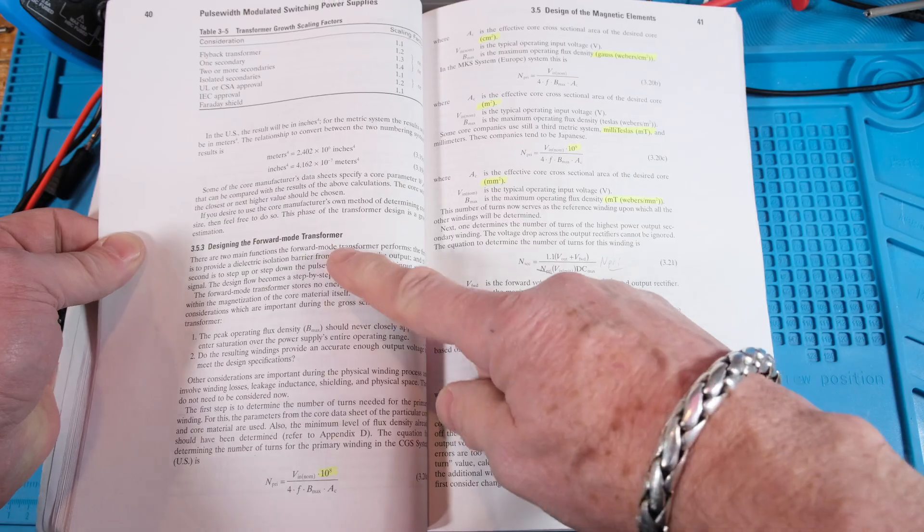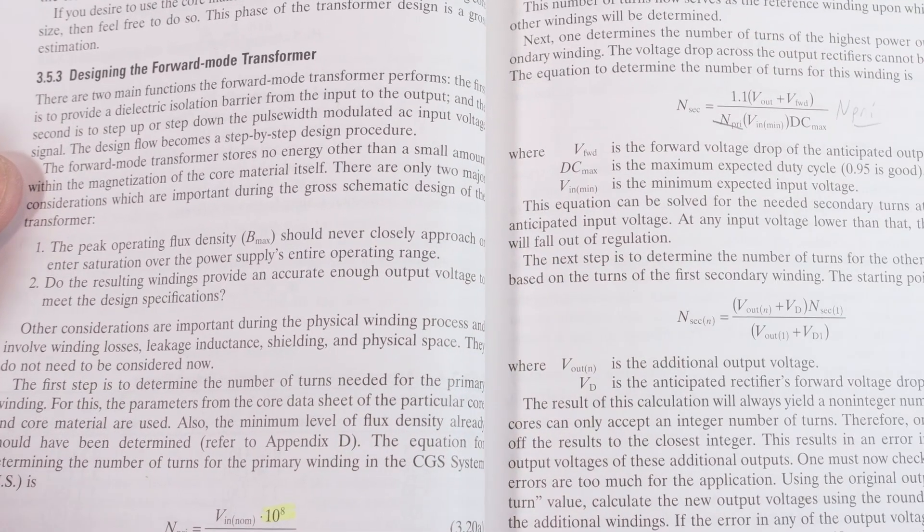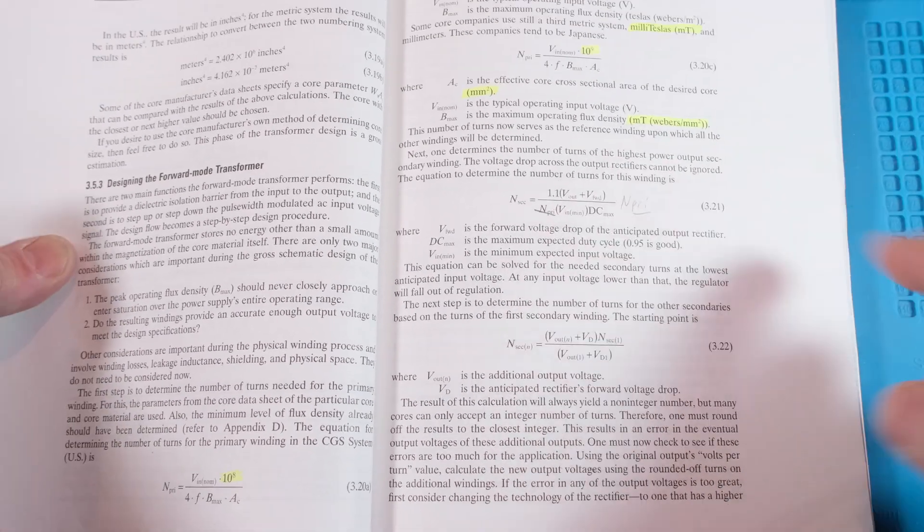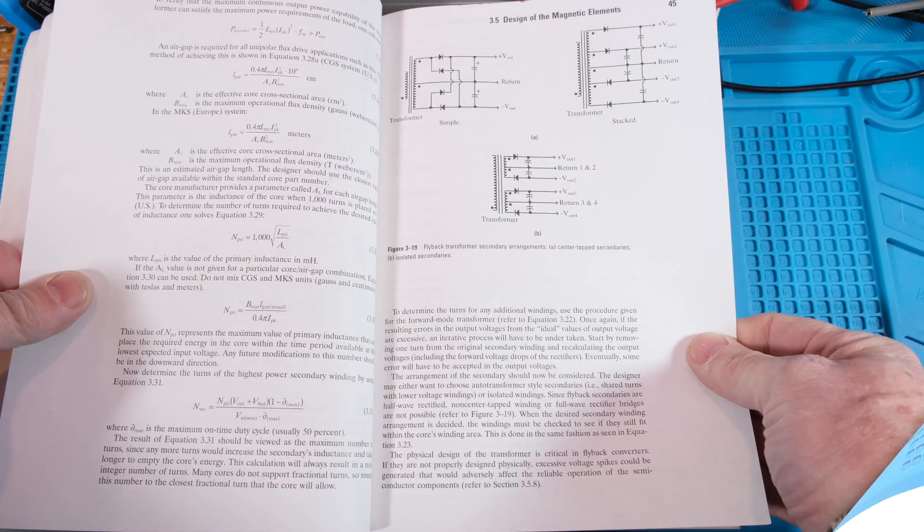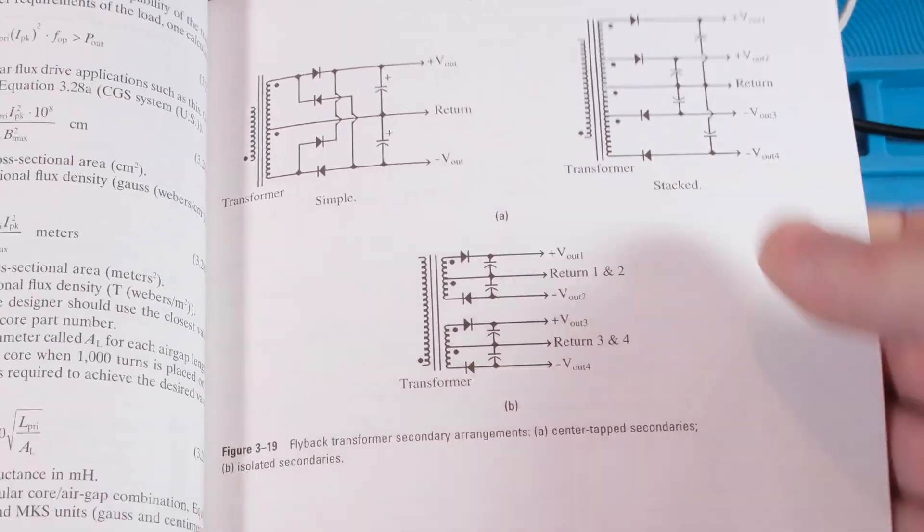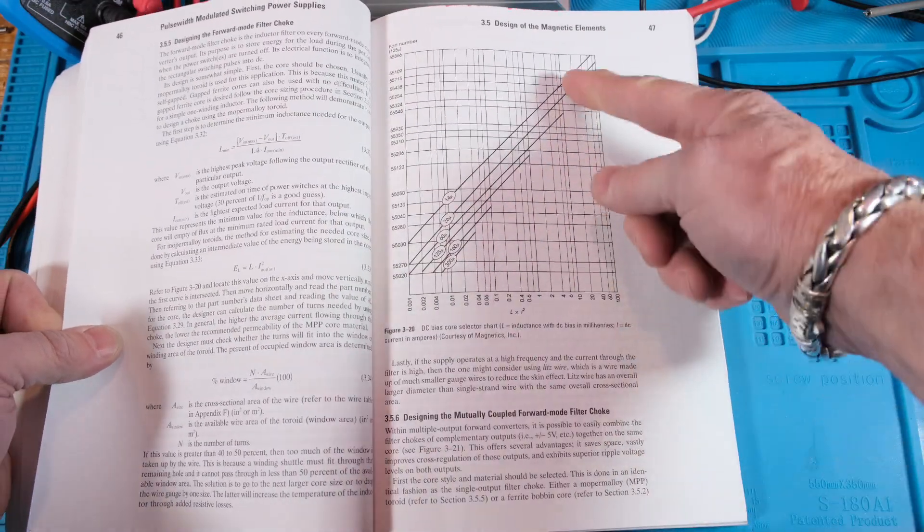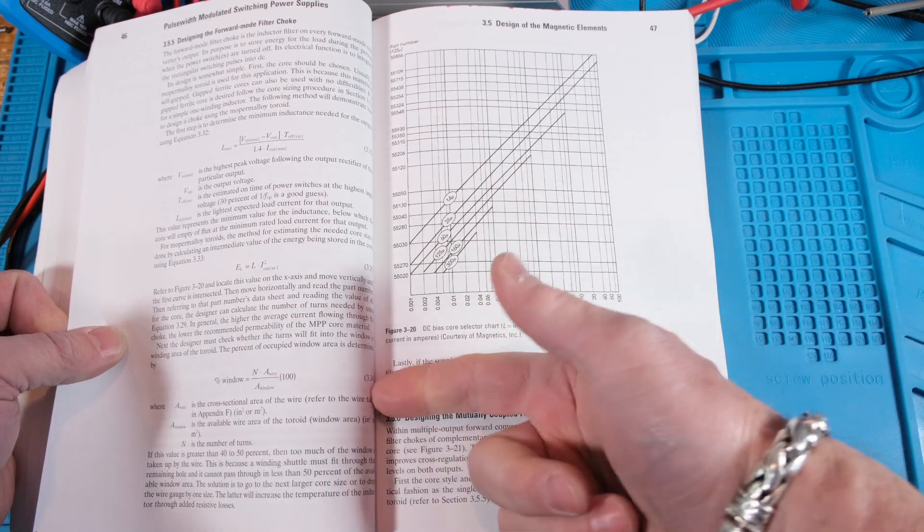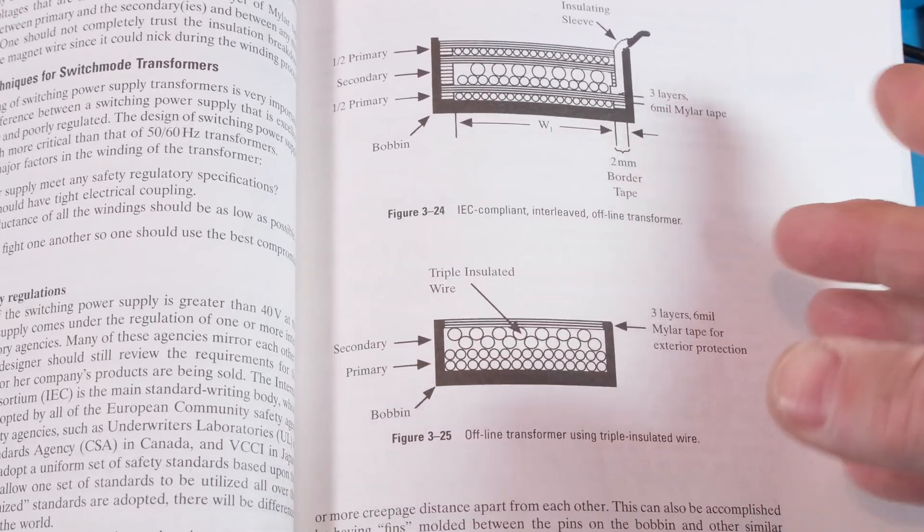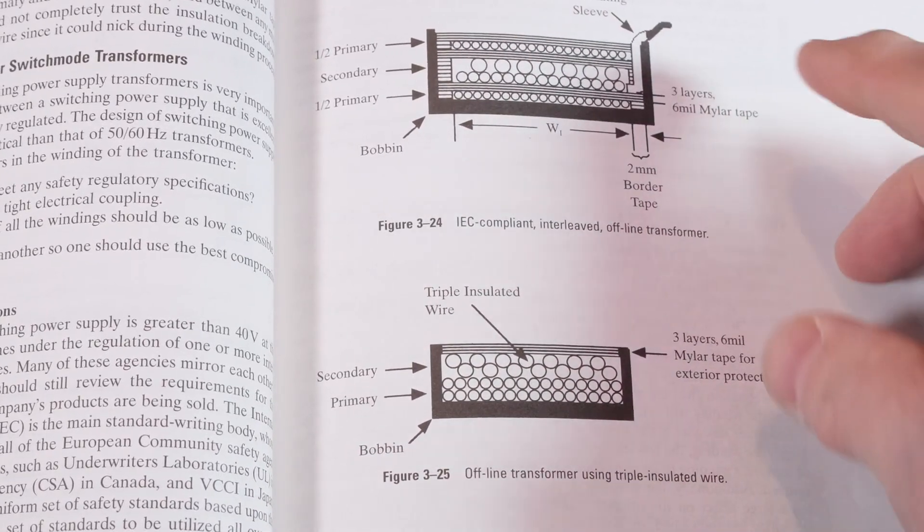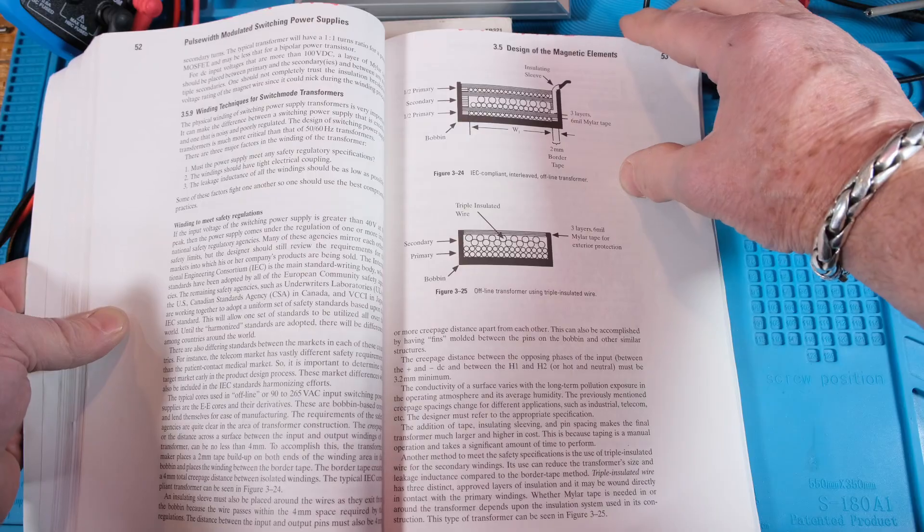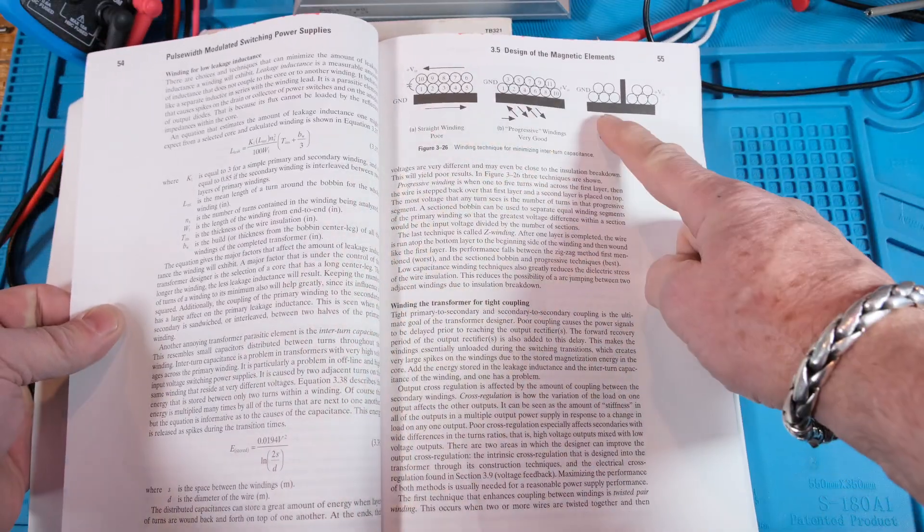And this is designing a forward mode transformer. Again, step-by-step approach. Now I did make a correction right here in the book. There was an error there. There's some more equations and diagrams of the outputs, the different types of outputs you might have. And here's some more magnetic design information explaining more about the magnetics. Cookbook type approach, he shows how to sandwich your windings, how to construct your transformer. And here's more of that information.